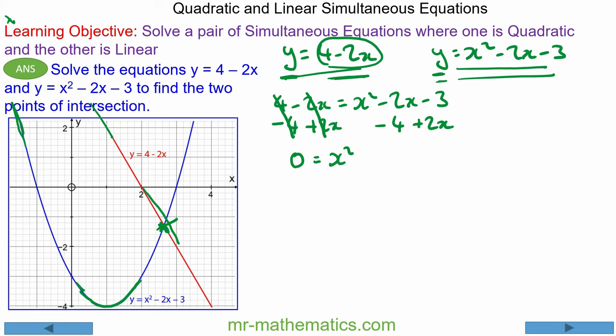So you're left with 0 equals x squared minus 2x plus 2x will cancel to make 0, and negative 3 take away 4 will make negative 7. So we have 0 equals x squared minus 7. Now we have x squared equals positive 7.